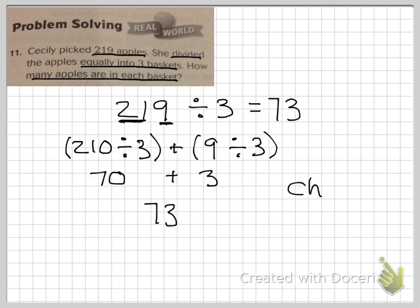Let's check. We would do 73, our quotient, times our divisor, and we should get our dividend. 3 times 3 is 9. 3 times 7 is 21. Did we get our dividend? Yes, we did. So we must be right.